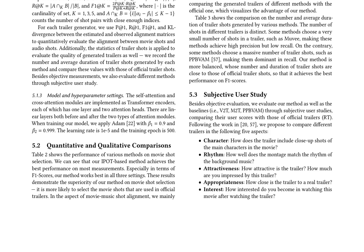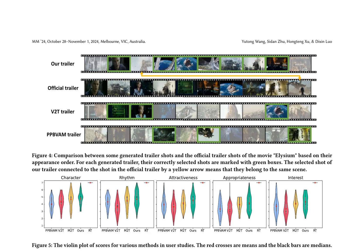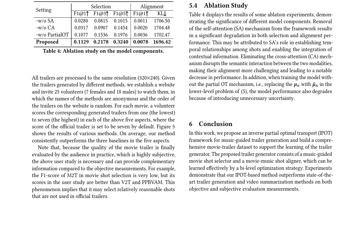In terms of trailer shot selection, the proposed method is more balanced, with the number and duration of trailer shots close to those of official trailer shots, resulting in the best performance on F1 scores. The subjective user study also demonstrates the superiority of the proposed method, with higher scores in terms of character, rhythm, attractiveness, appropriateness, and interest. An ablation study is conducted to evaluate the significance of different model components, including self-attention (SA), cross-attention (CA), and partial OT mechanisms. The results show that removing any of these components results in significant degradation in both selection and alignment performance.